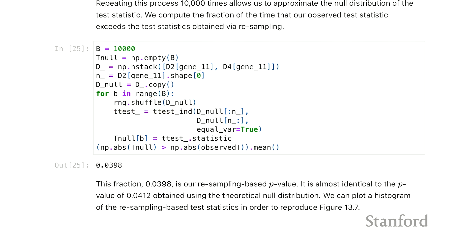We use this shuffle function, and we're going to store the test statistic. Now we'll have 10,000 test statistics, and we can see how does that compare to our observed test statistic.